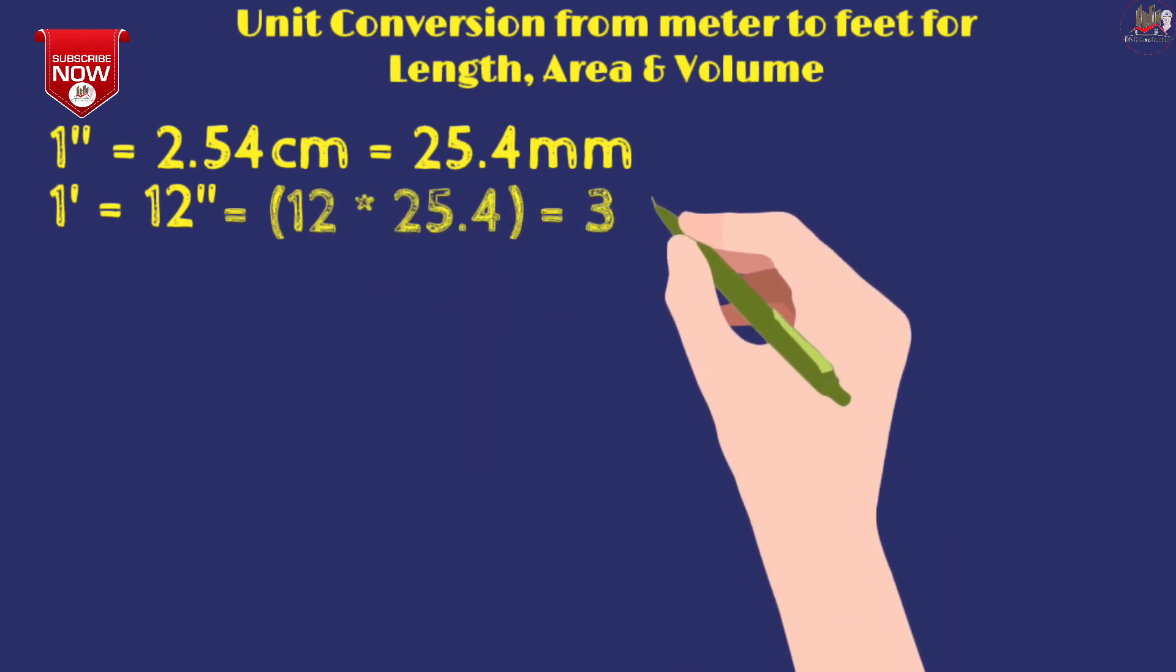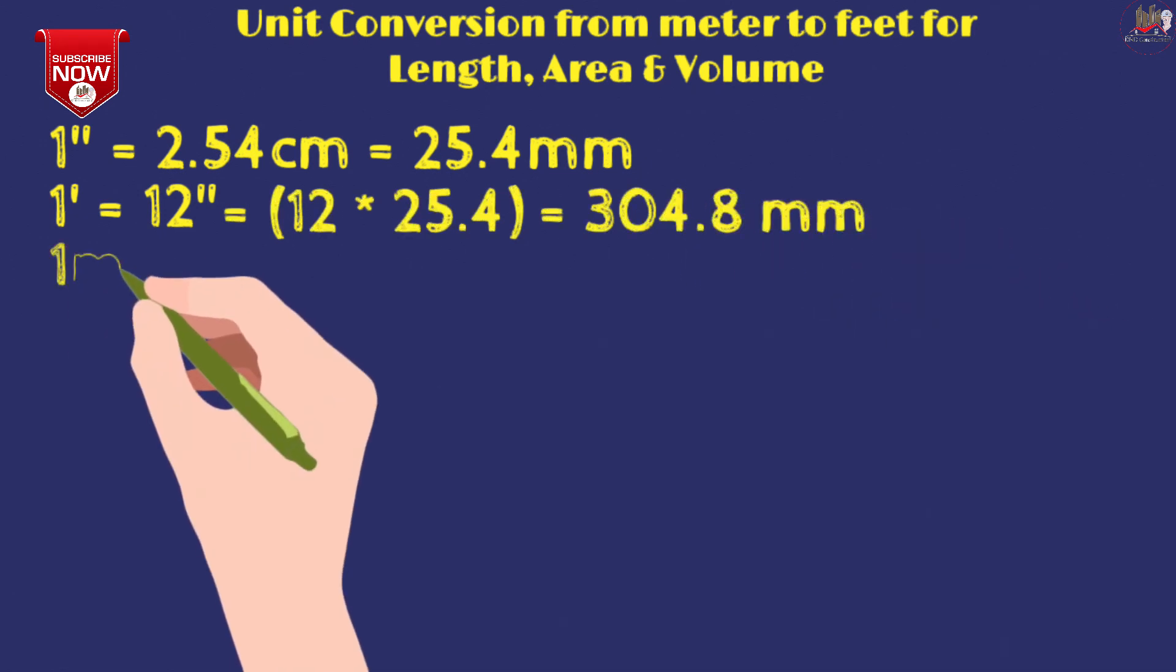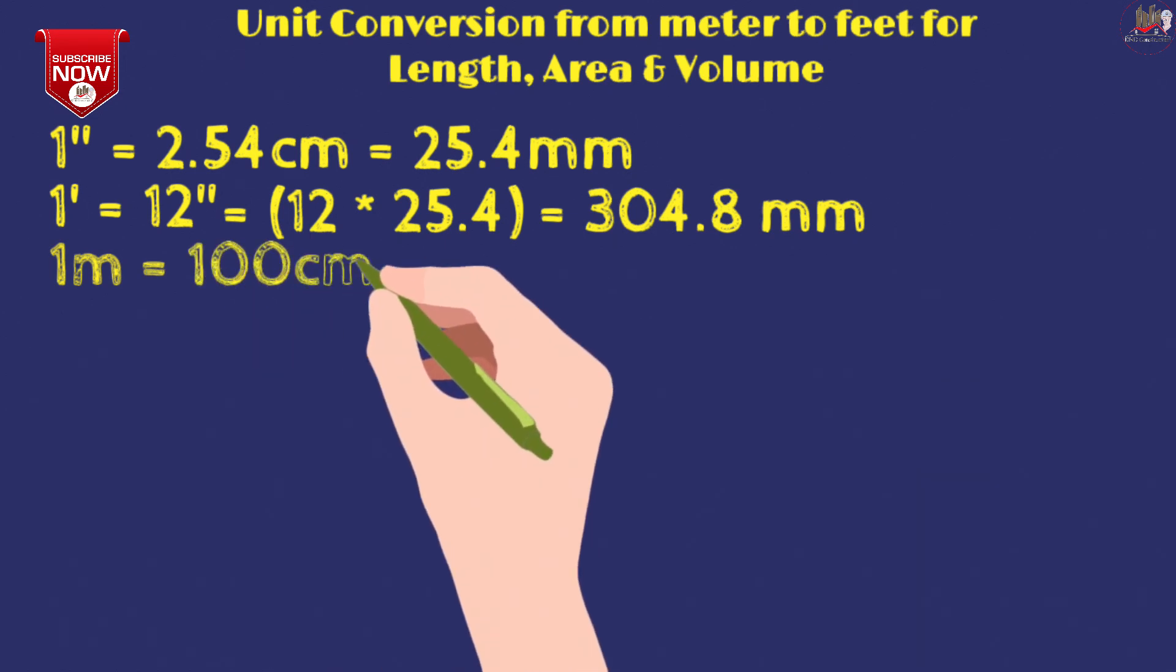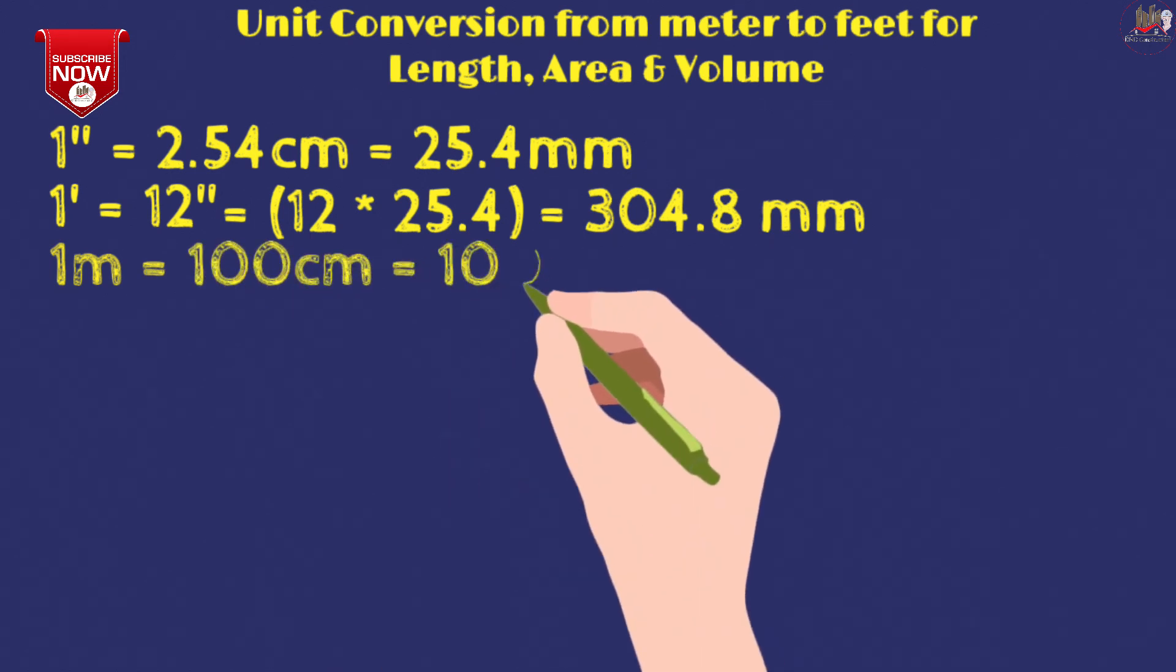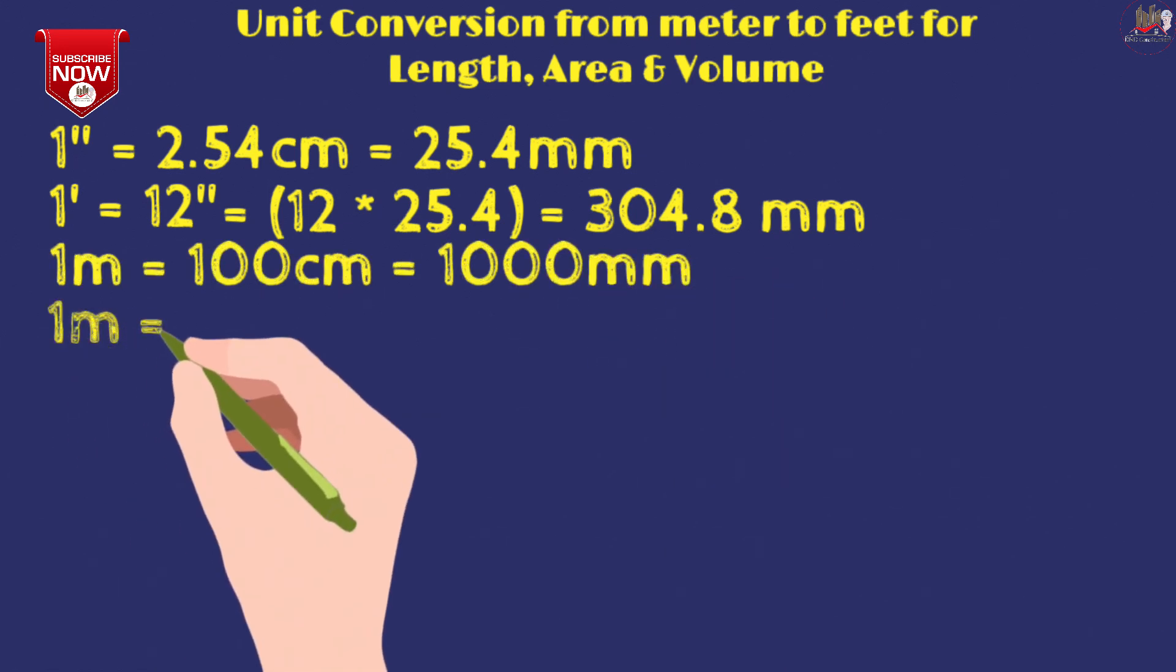You should know the basics: 1 meter is 100 centimeters and 1 meter equals 1000 mm.